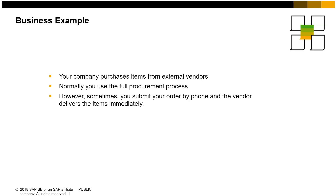Imagine that your company purchases items from external vendors. Normally, you use the full procurement process. However, sometimes you need items right away. You submit your order by phone and the vendor delivers the items immediately. For the expedited process, you do not use the full purchasing process. Instead, you use just one purchasing document to keep the process as simple and quick as possible.